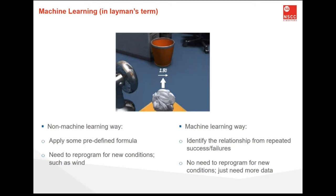In the machine learning way, it is not that difficult. We just have to do many rounds of trial and error, which we call experiments. We try to throw the paper from different distances and different angles. Some trials will be successful and others will fail. Machine learning tries to identify the relationship from the repeated successes and failures. Therefore, in the future, we don't have to reprogram for new conditions or external factors — we just need more data to train the machine learning model.